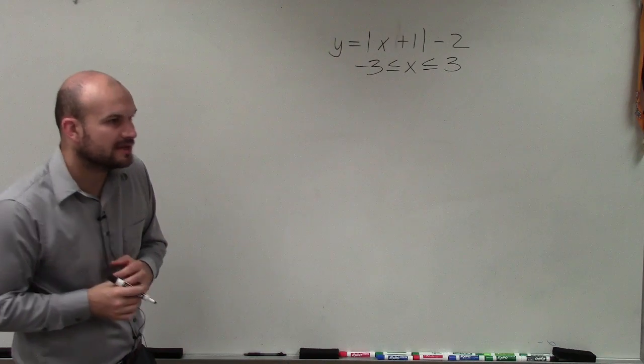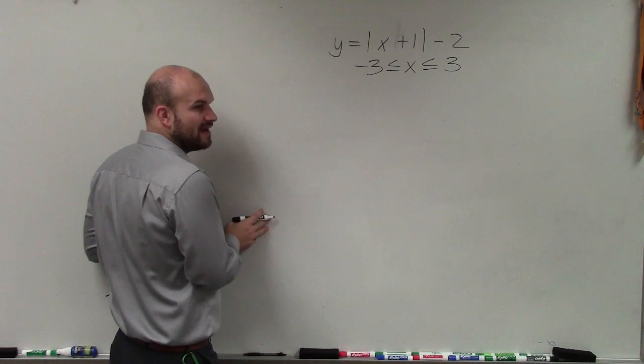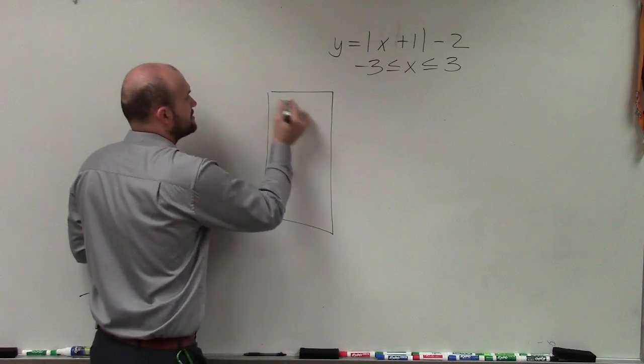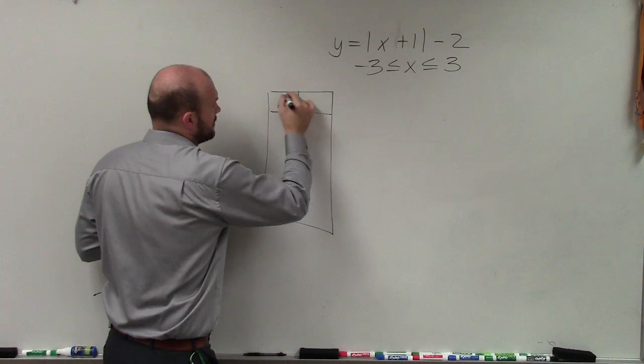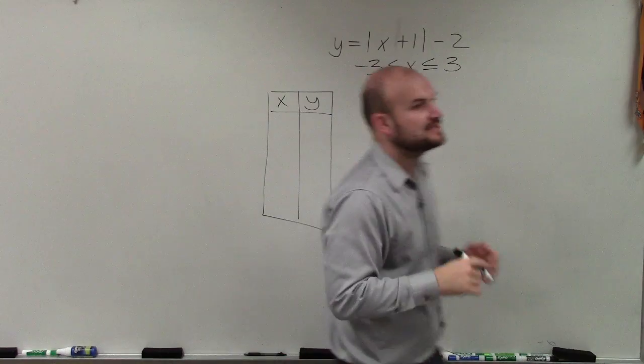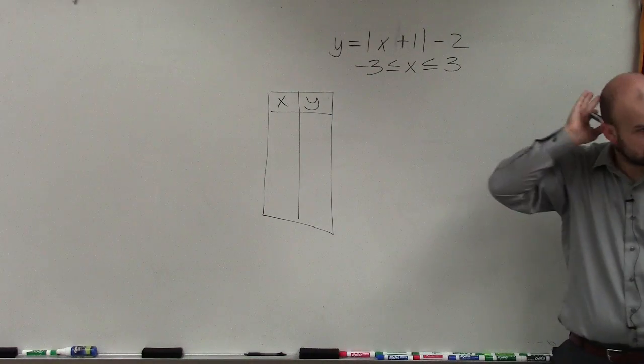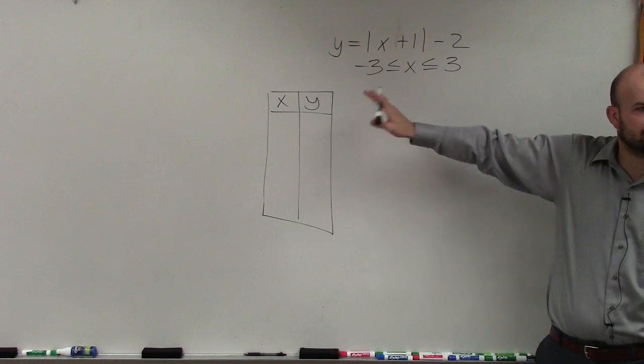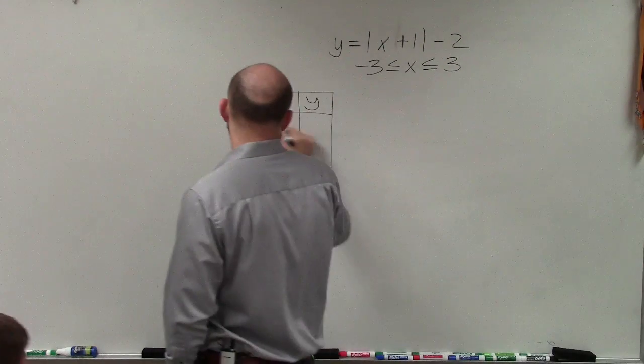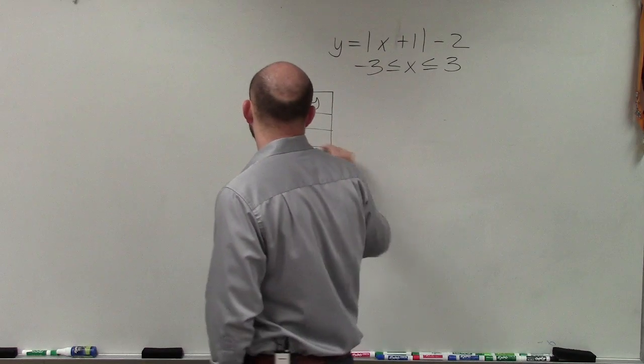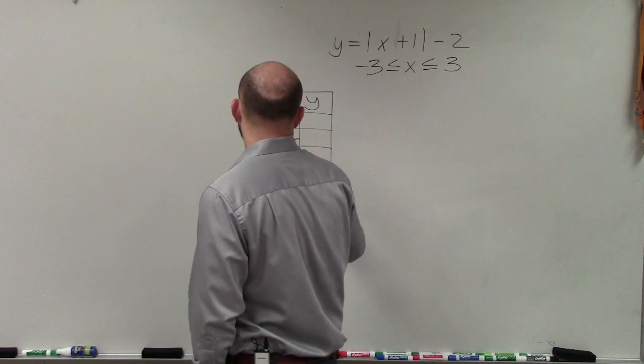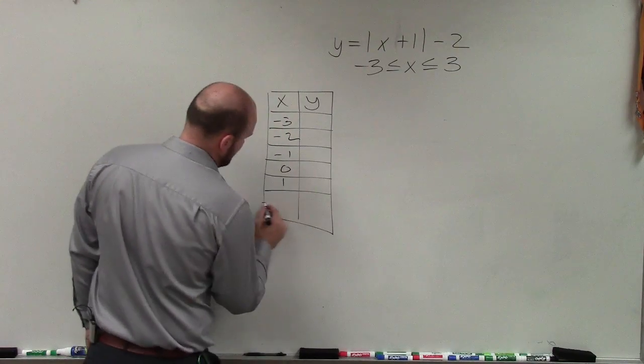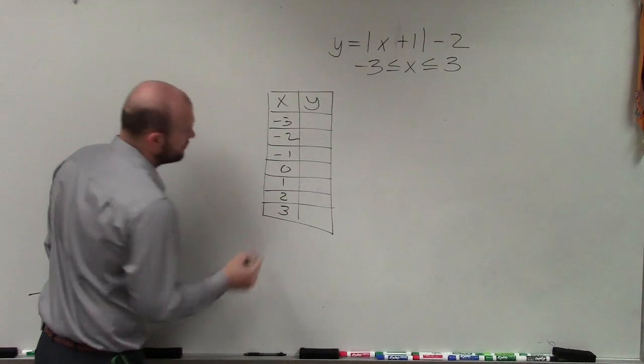Between negative 3 and 3. So to create a table of values, all we're simply going to do is we're going to have x-coordinates and we're going to have y-coordinates. And as my constraint states, I want values of x between negative 3 and 3. So I'm going to go negative 3, negative 2, negative 1, 0, 1, 2, and 3.